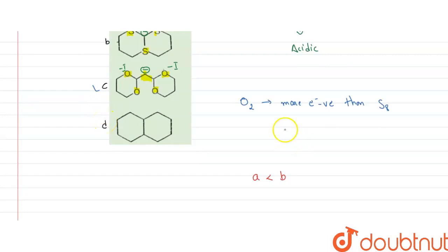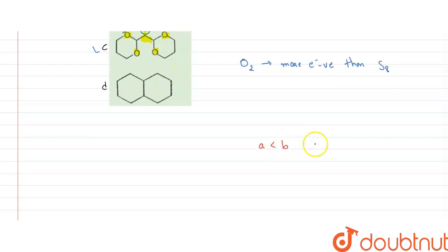For now I'm not clicking it, we'll check option D as well. But yes, C is more stable than A and B. So C is more stable than both of these.